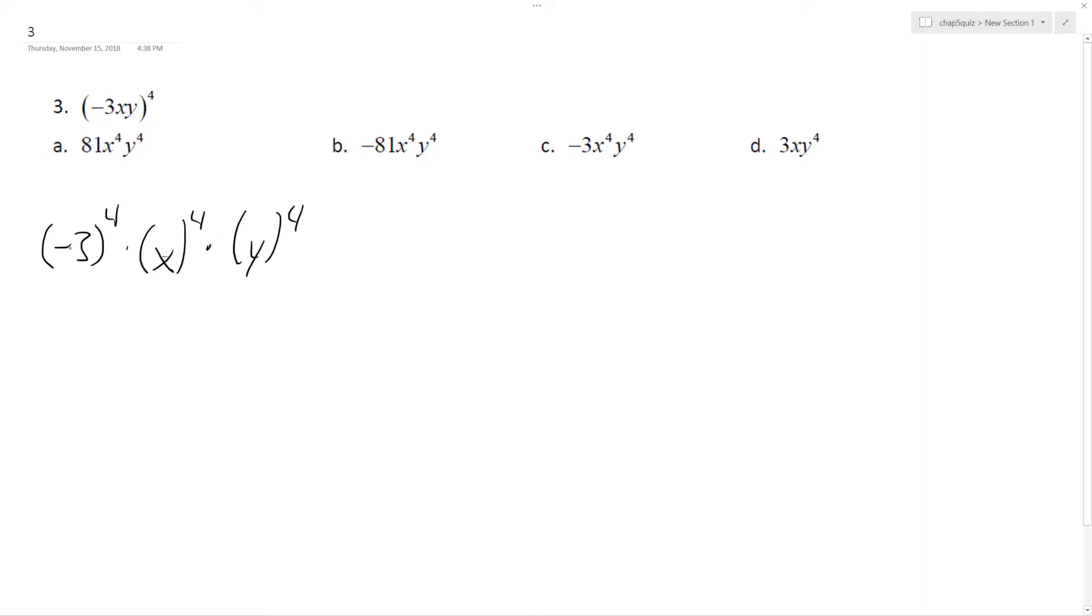So negative 3, this is negative 3 times negative 3, which is positive, times negative 3, which would be negative again. But since it's to the fourth, it ends up being positive, so this is 81. And then we get x to the fourth and then y to the fourth.